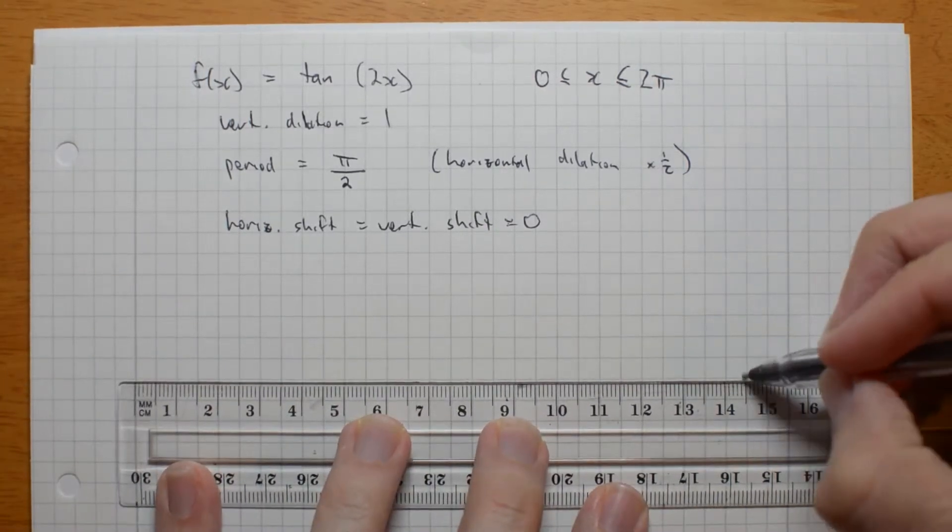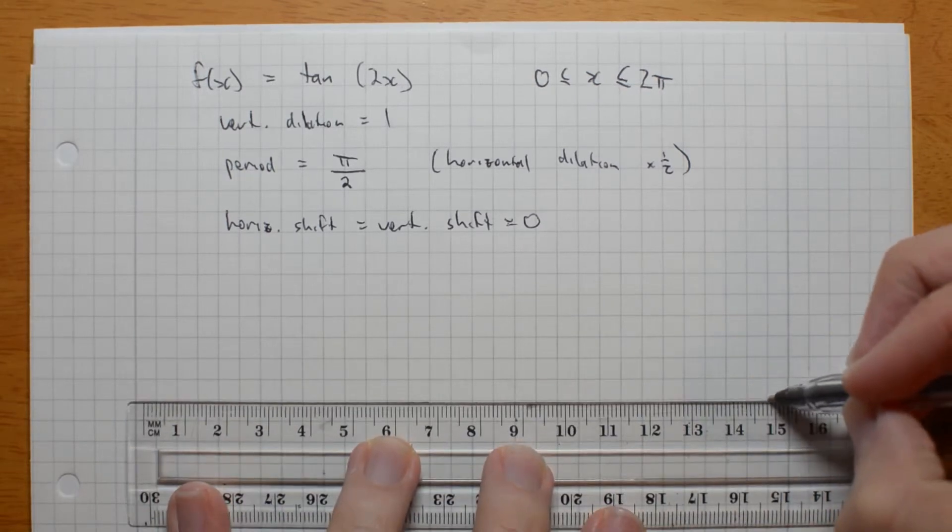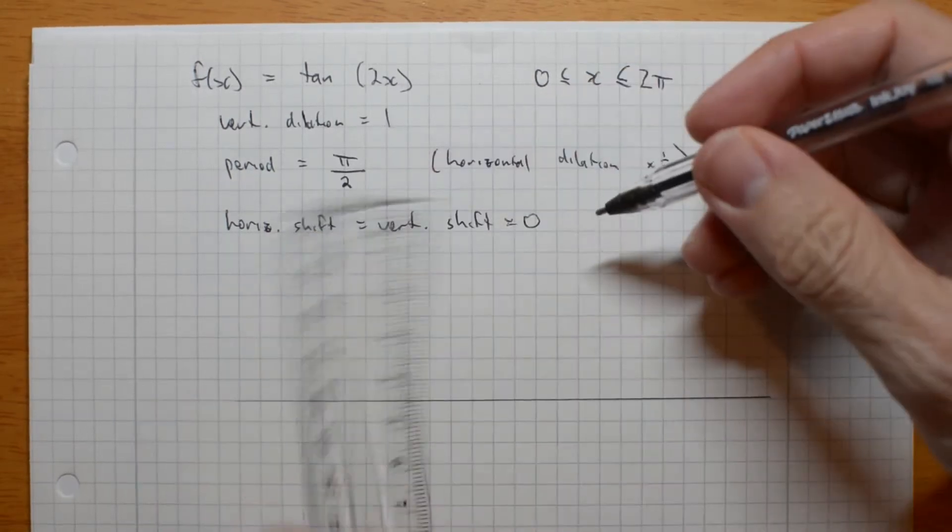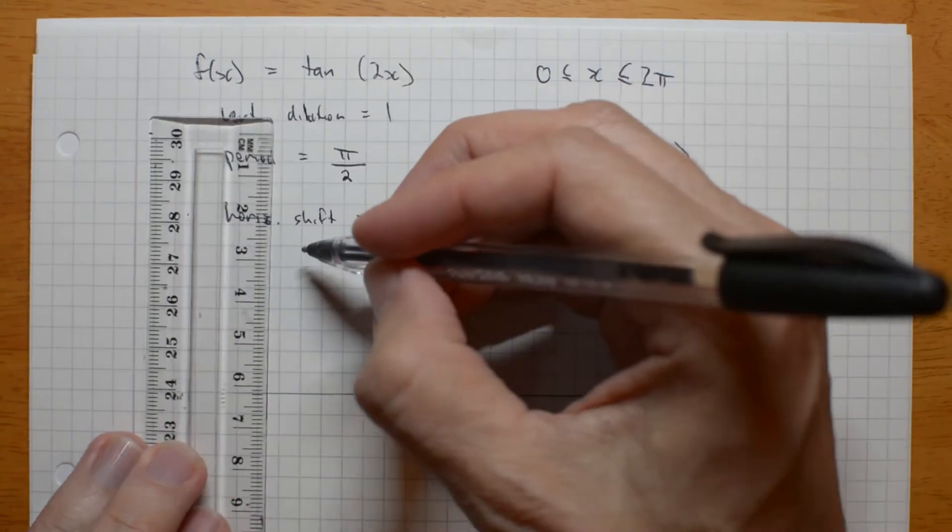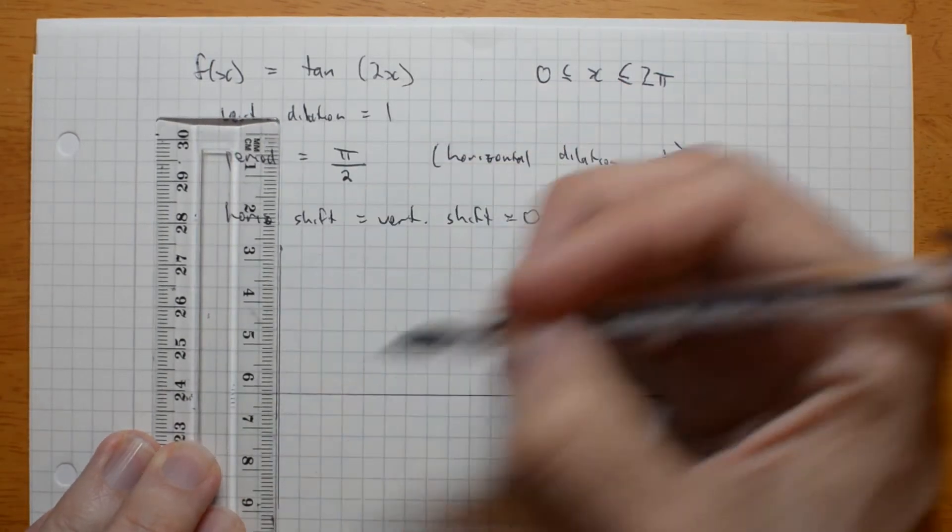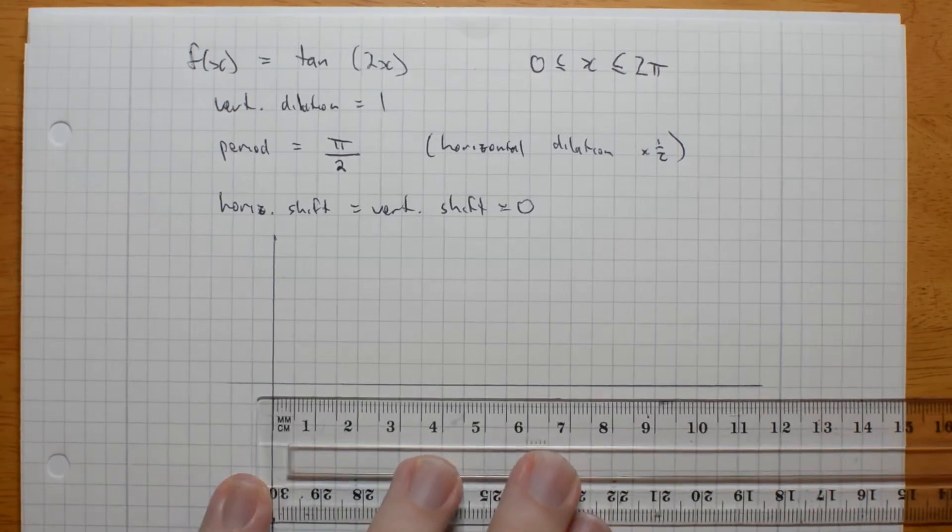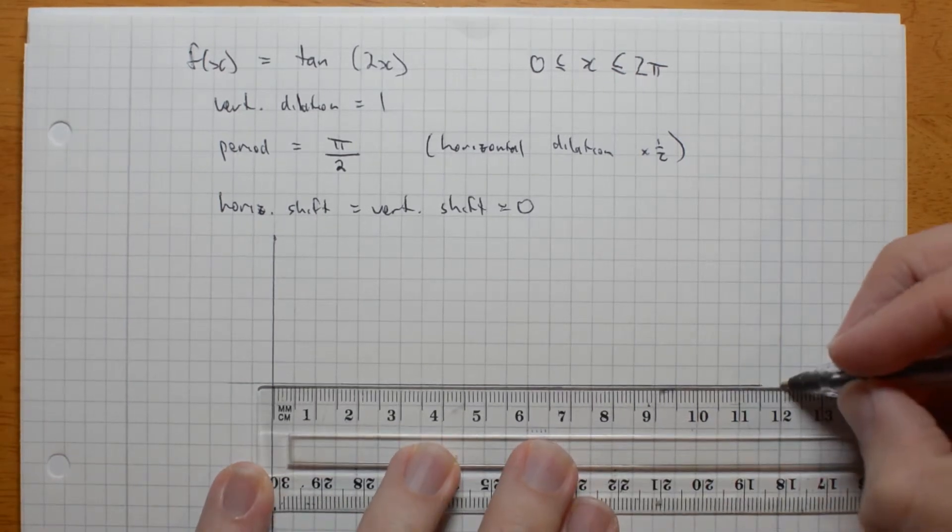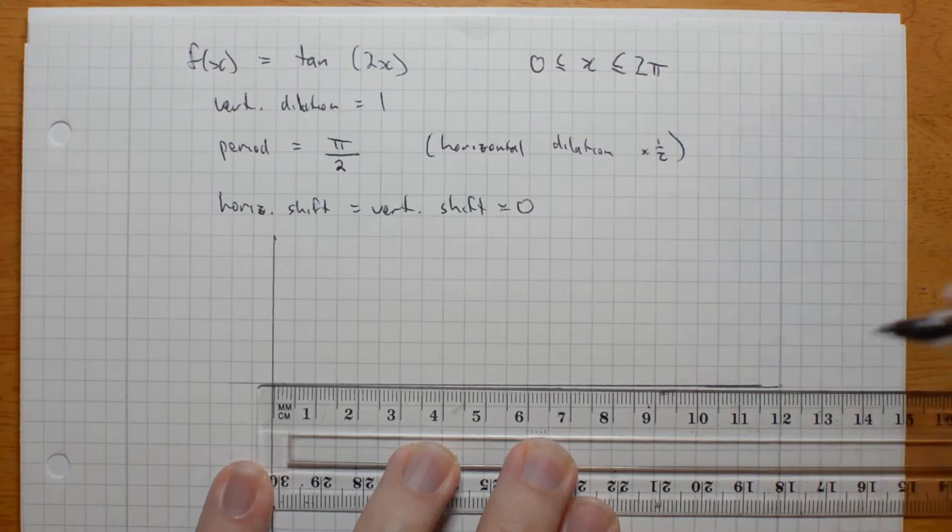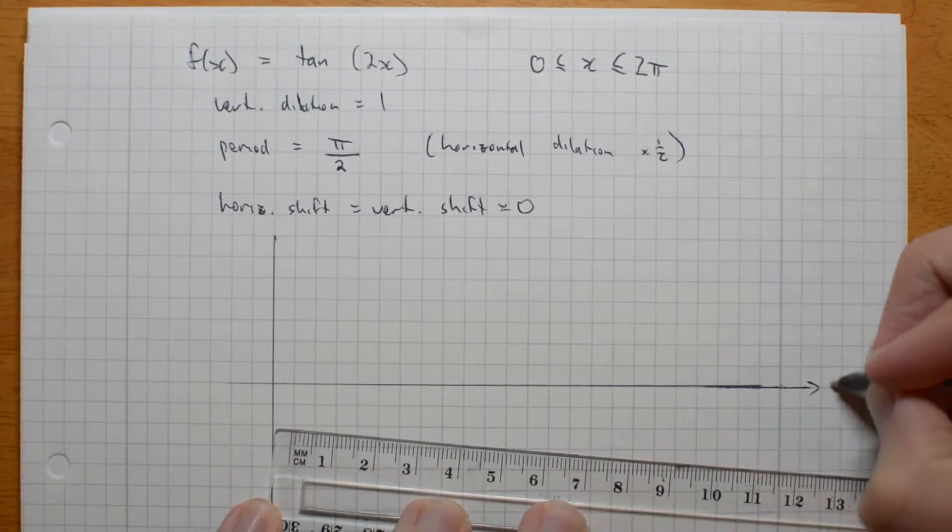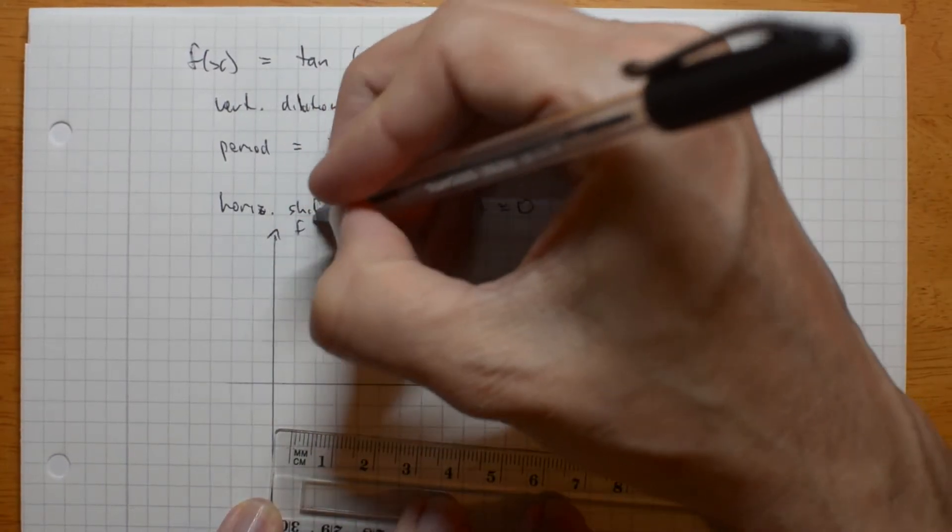So, let me put in my axis, give myself a bit of room, I think. Alrighty. And we are going from 0 up to 2 pi. Might even make that a bit longer. So, I can fit more in. So, that's x, and this is f of x.